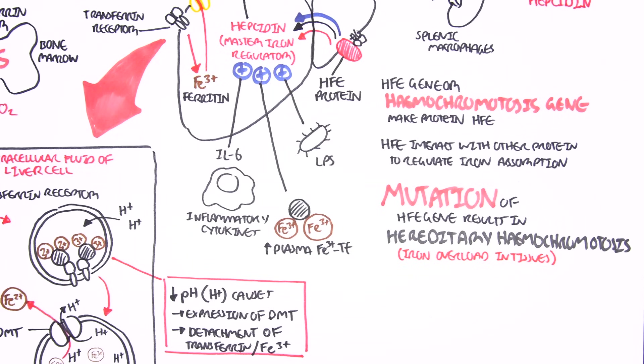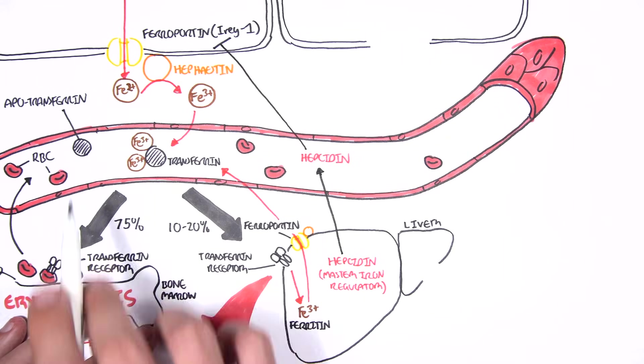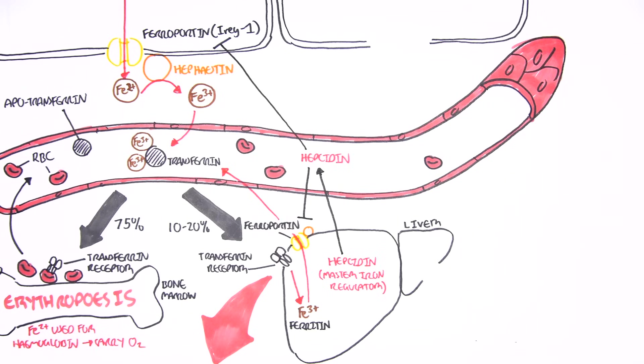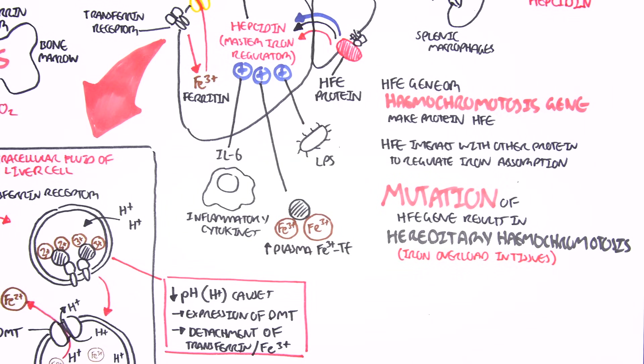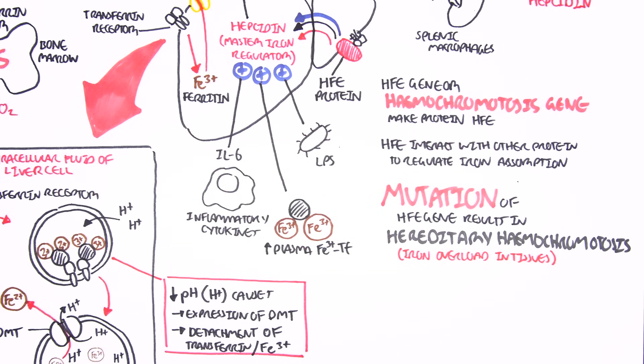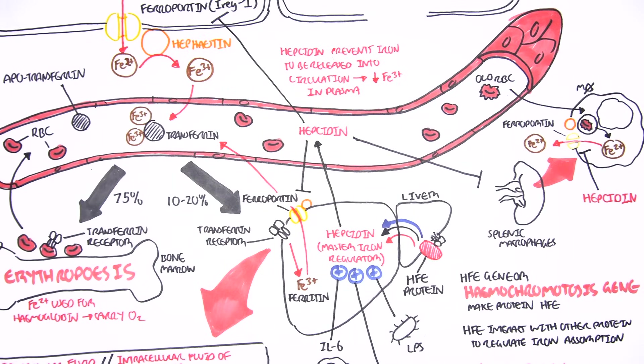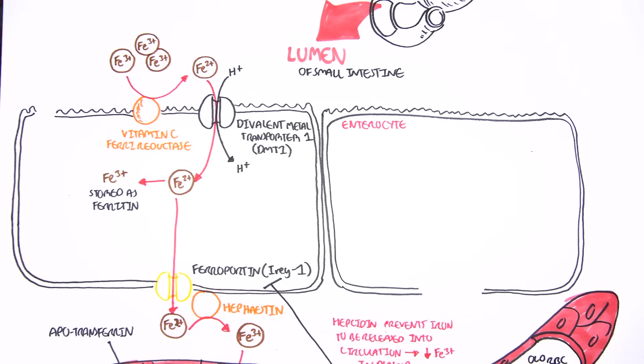So, how would a mutated HFE protein result in iron overloading tissues? Well, to understand this, we have to flashback and remember what hepcidin does. Remember, hepcidin blocks ferroportin transporter here. And it also prevents the absorption of iron from the intestine. Its sole goal is to decrease plasma iron concentration. But if HFE protein doesn't work, that means hepcidin will not work. And therefore, hepcidin cannot prevent or inhibit the absorption of iron from the small intestine. And therefore, the body will absorb a lot of iron from the intestine. And so, you have excess iron in tissues. And this can lead to severe consequences.